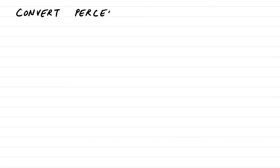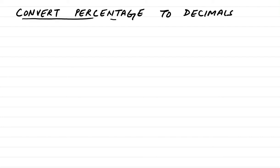Let's learn how we can convert percentage numbers to decimal form. To convert a percentage to a decimal, we need to divide the number by 100.